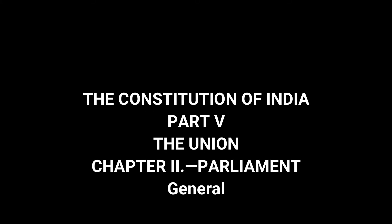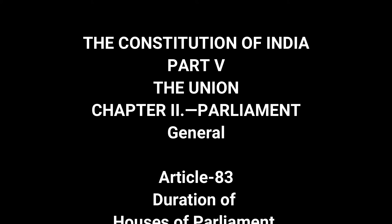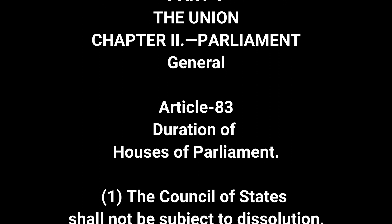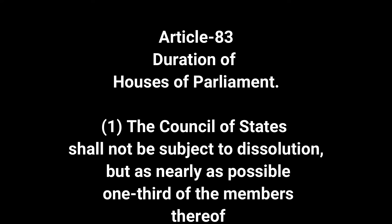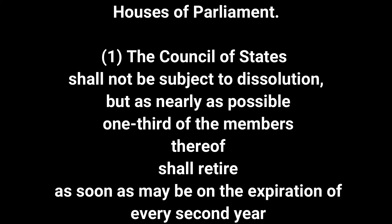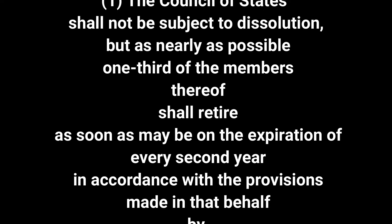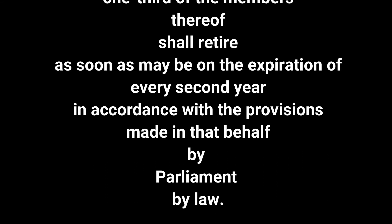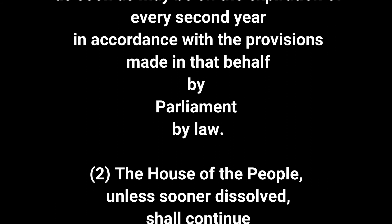The Constitution of India, Part 5: The Union, Chapter 2: Parliament General. Article 83: Duration of Houses of Parliament. Clause 1: The Council of States shall not be subject to dissolution. But as nearly as possible one-third of the members thereof shall retire, as soon as may be on the expiration of every second year, in accordance with the provisions made in that behalf by Parliament by law.